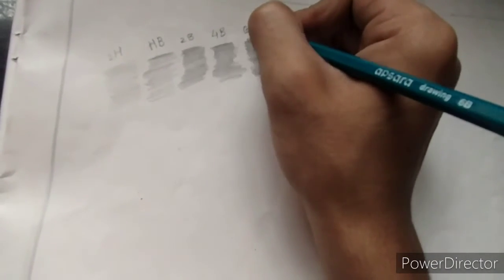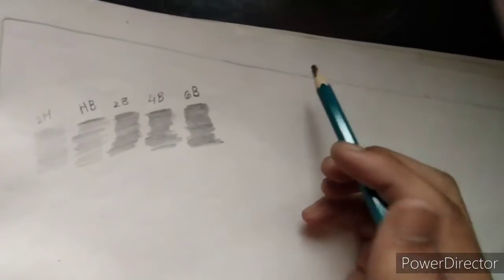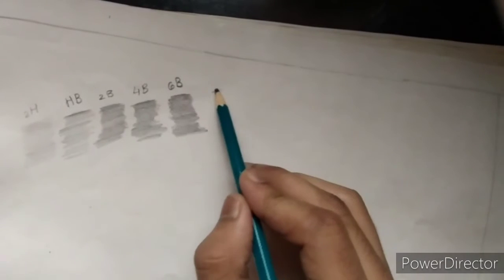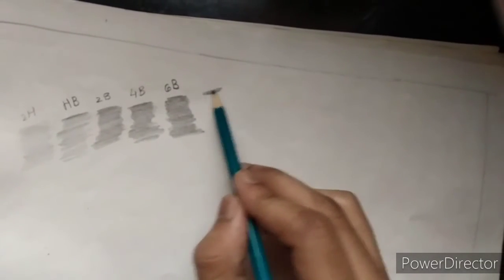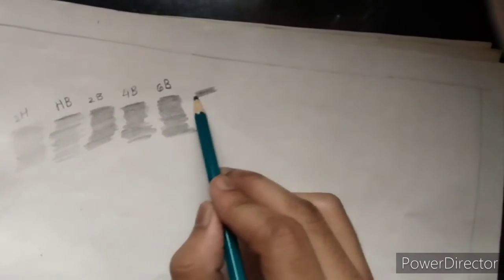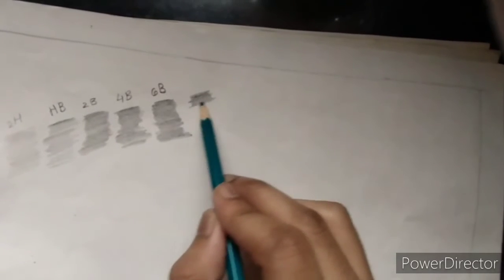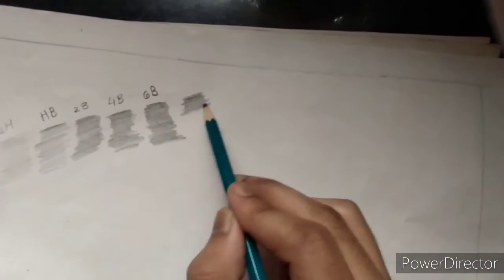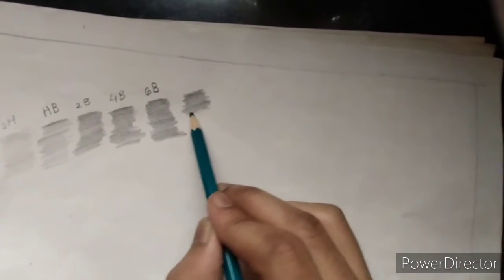This is 4B, this is 6B, and now I'll be using 8B and then 10B. So you can see as the grade is getting greater, the pencil is getting darker. 10B is the most darkest pencil.